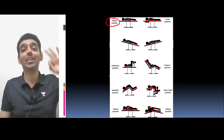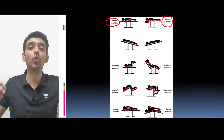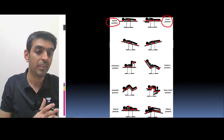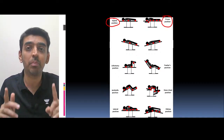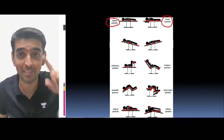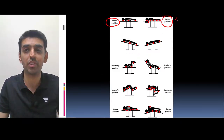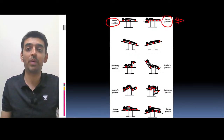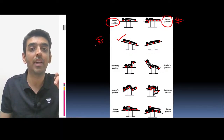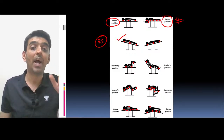The most important and most frequently seen position under anesthesia is the supine position. The second one is the prone position. Tell me in the comment section — where do we use prone position under anesthesia? For which surgeries do we require prone position? It is exactly correct — it is for spine surgery. Most of the times prone position is used for spine surgeries or spine procedures.